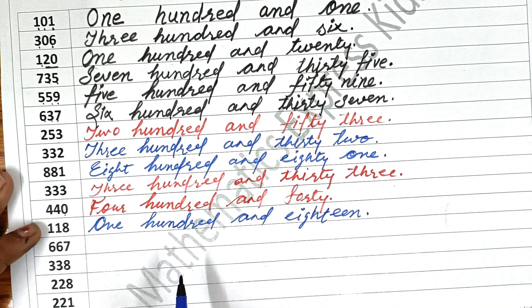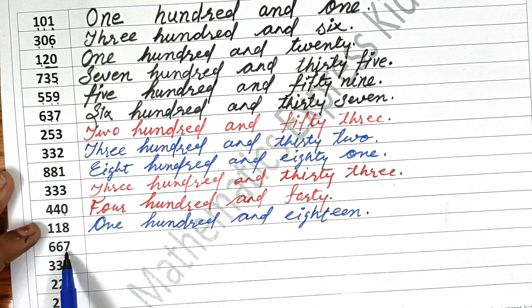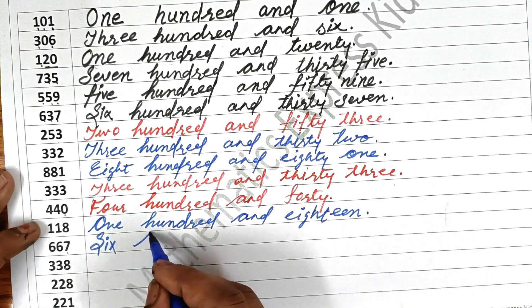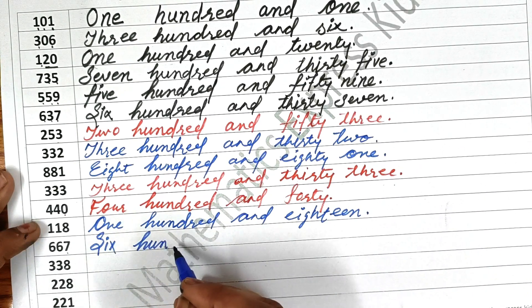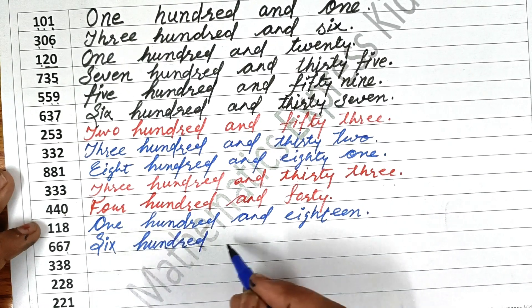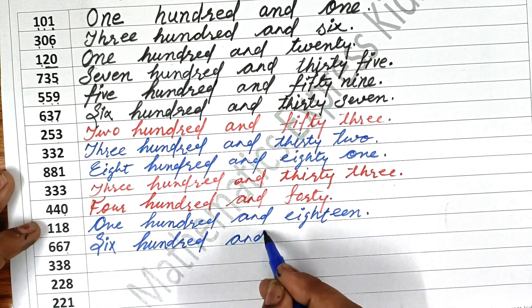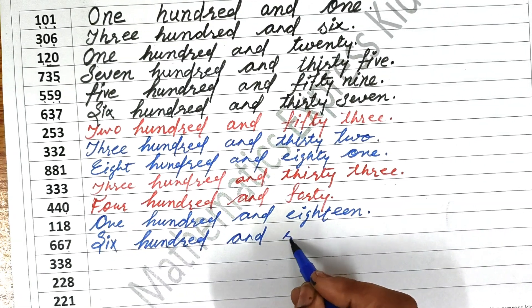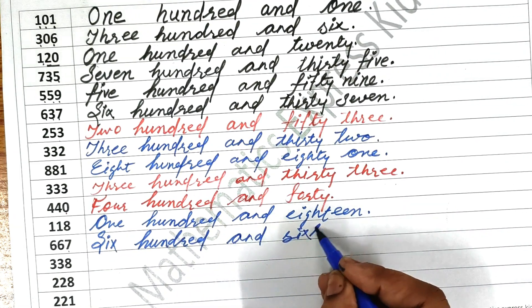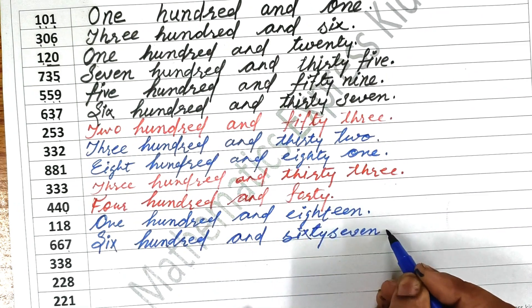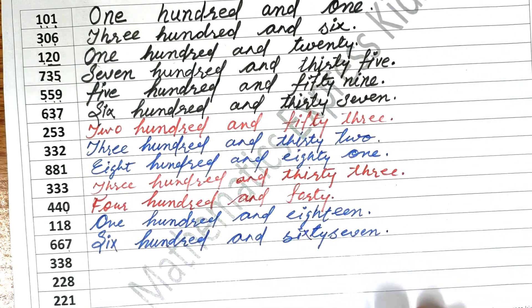Next one is six hundred and sixty-seven. Write six hundred — H-U-N-D-R-E-D — and sixty — S-I-X-T-Y — seven — S-E-V-E-N. Sixty-seven. Okay.